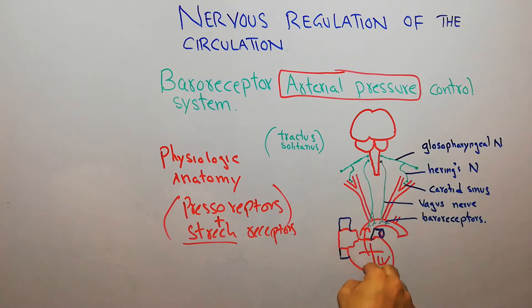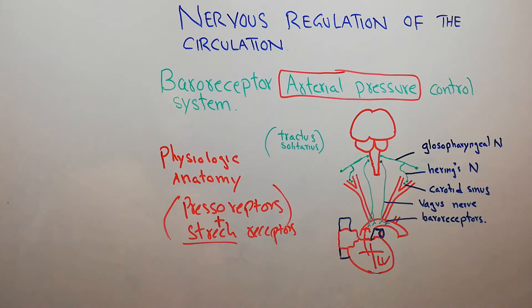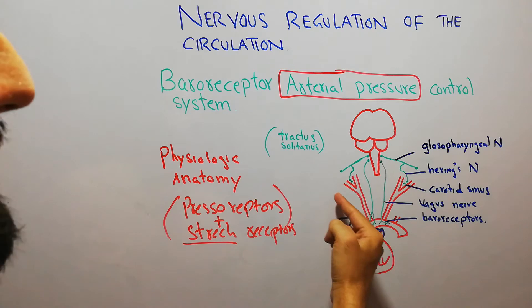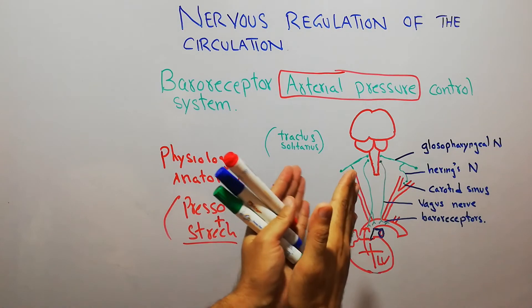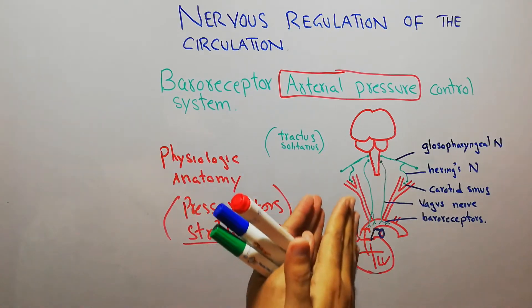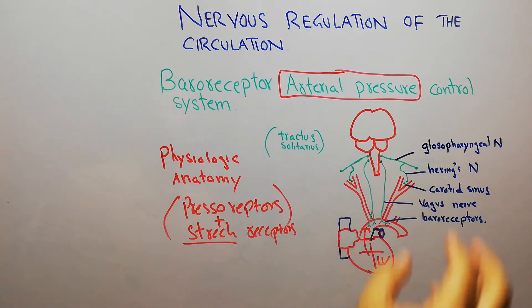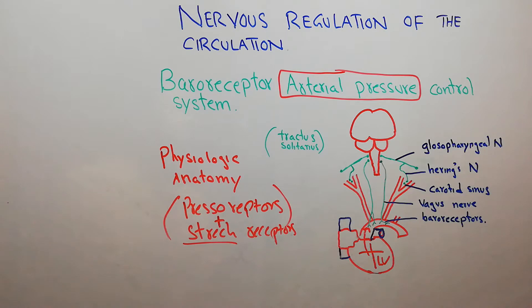The aortic arch comes from the left ventricle, and from the aortic arch two common carotid arteries arise. The common carotid arteries divide into the internal carotid artery and the external carotid artery, and at the point where the common carotid arteries bifurcate into internal and external carotid arteries there are a lot of baroreceptors. That point is known as the carotid sinus.